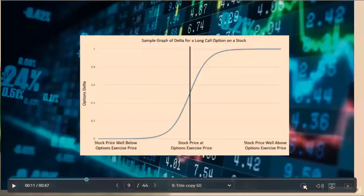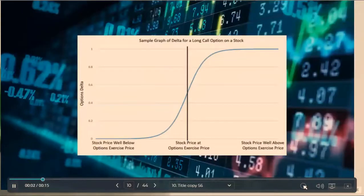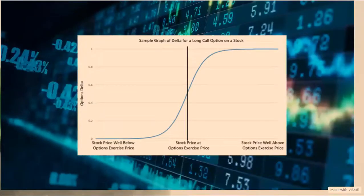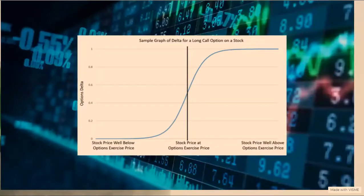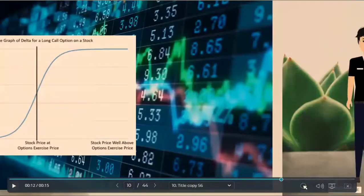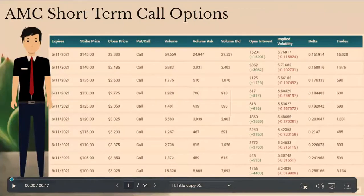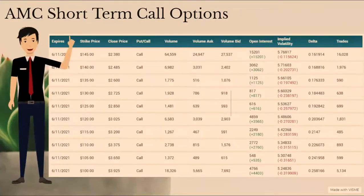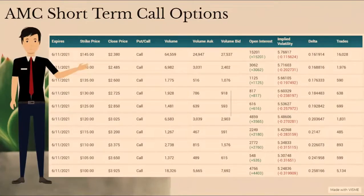So just to quickly recap, gamma is the rate of change in an options delta per one-point move in the underlying assets price. The chart here shows a sample graph of what an options delta chart would look like for a long call option on a stock. So we're seeing a lot of short-term call options buying. As we can see here, over 16,000 trades have happened for the 145 strike calls expiring on June 11th, which is this Friday.